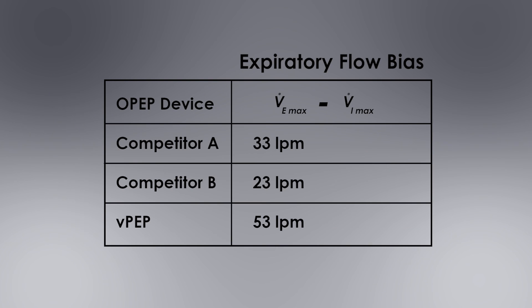To summarize the three OPEP products, we see that the VPEP has by far the greatest difference between VE and VI. This bias of expiratory flow drives maximum secretion movement.